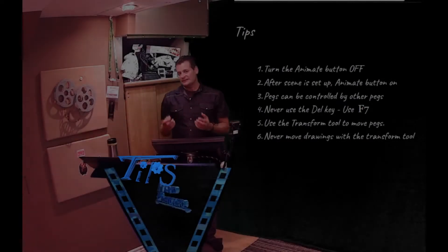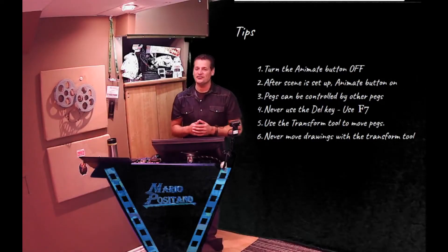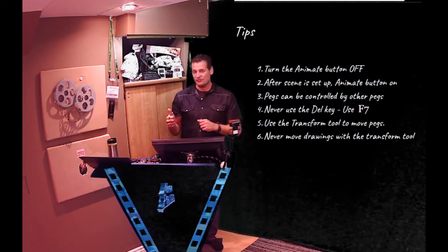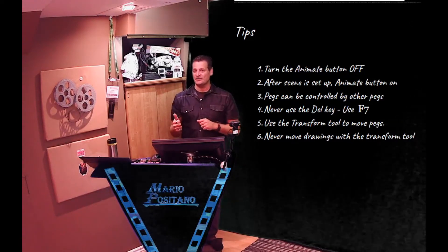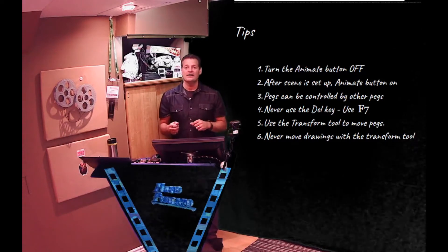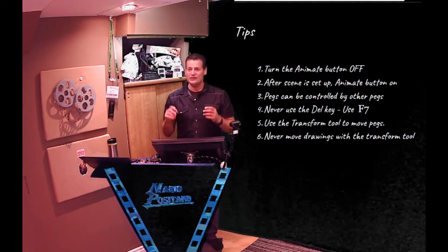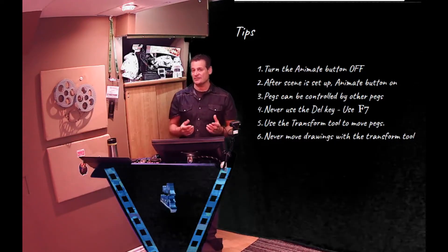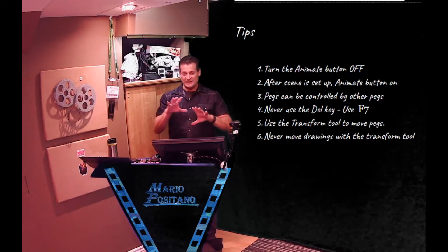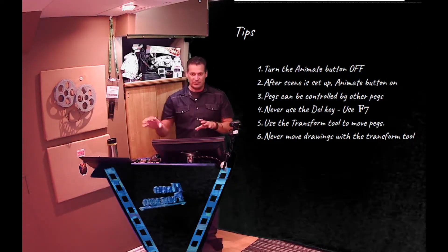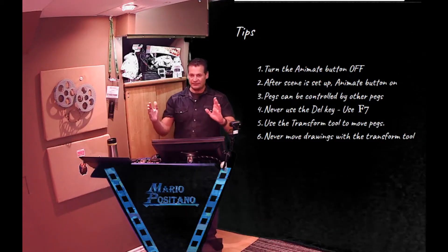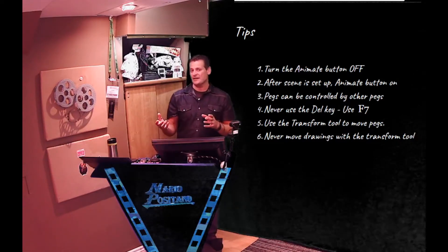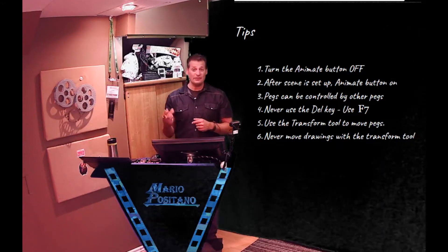Before we get started, I have some tips to pass on. First: when you start up Harmony, turn off the animate button. That button has to be off. When do we use that button? That's tip number two — we turn that button on when we're ready to animate our pegs. But if we're just setting our scene up, putting the house in the right place, putting the character in the right place, that button should be off. When you're ready to animate the pegs, then we turn the button on.